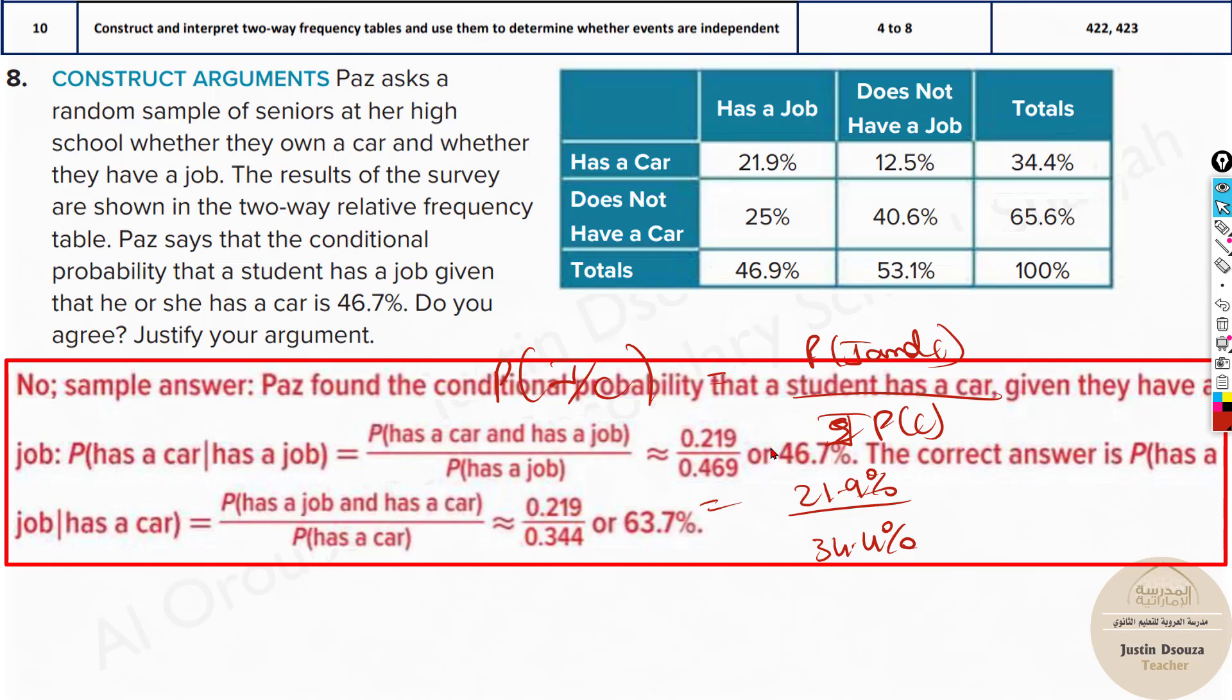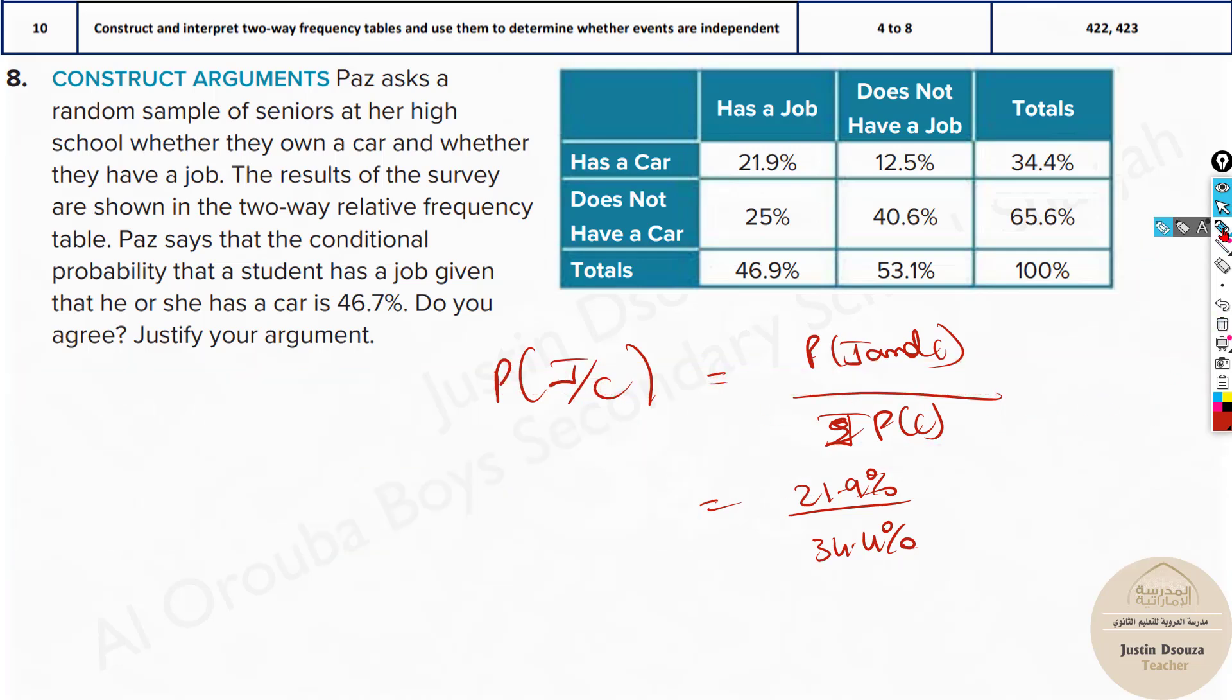We will just do this as well. If you just take probability of C condition J, that is probability of, this is the same thing, J and C itself, or C and J, it's the same thing, divided by, this is not C, probability of J. So it should be probability of J.